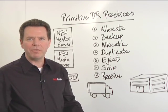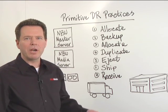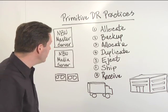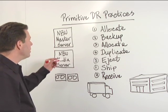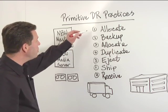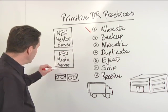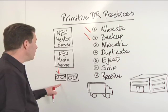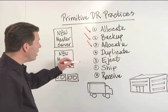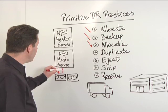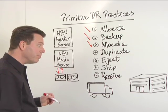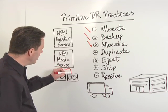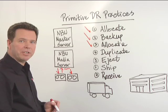Before Data Domain arrived on the scene, disaster recovery preparedness was based on making tape-based duplicates. To start this process, we would allocate a tape drive and do an initial backup. After the backup was complete, we would allocate two tape drives, read the entire backup image off the first tape, ship it through the NetBackup media server, and write it out to the destination tape.